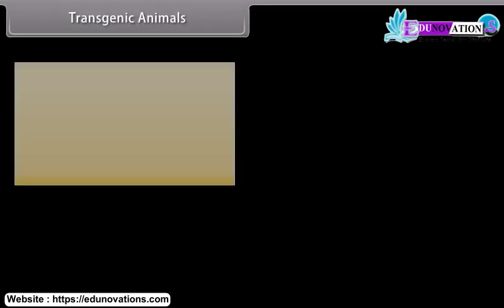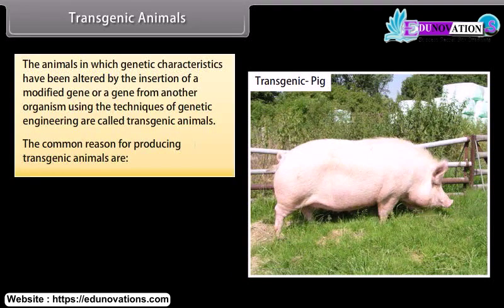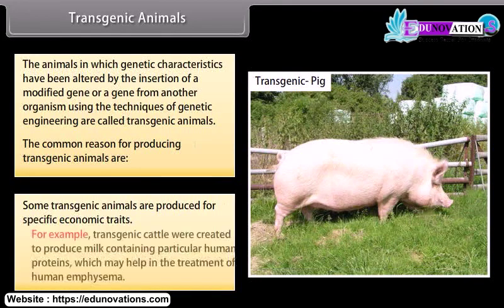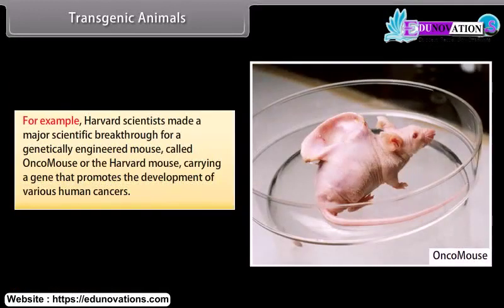Transgenic Animals: The animals in which genetic characteristics have been altered by the insertion of a modified gene or a gene from another organism using the techniques of genetic engineering are called transgenic animals. Some transgenic animals are produced for specific economic traits. For example, transgenic animals were created to produce milk containing particular human proteins which may help in the treatment of human emphysema. Harvard scientists made a major scientific breakthrough with a genetically engineered mouse called OncoMouse or the Harvard mouse, carrying a gene that promotes the development of various human cancers.